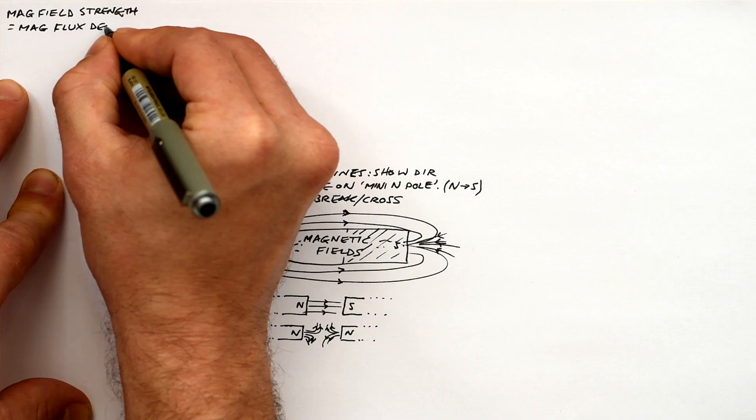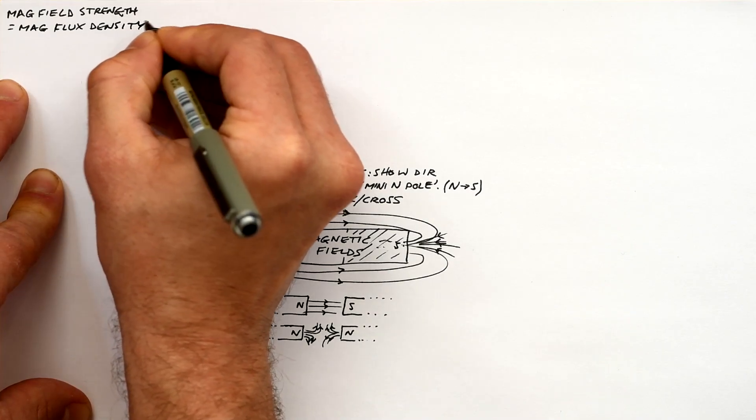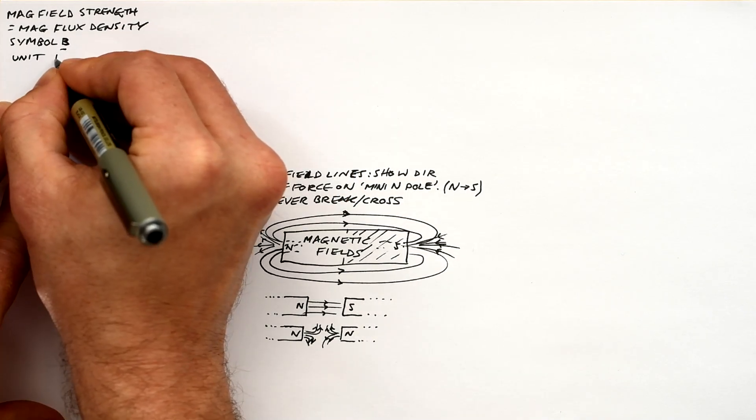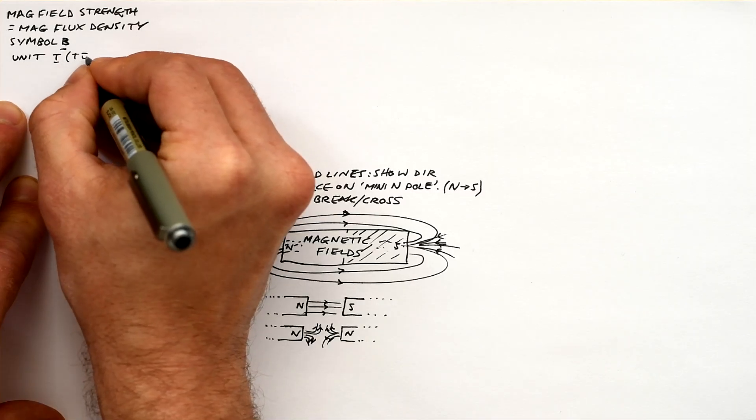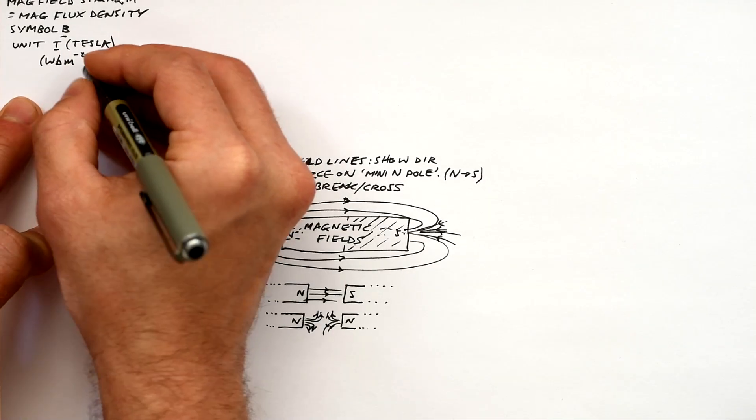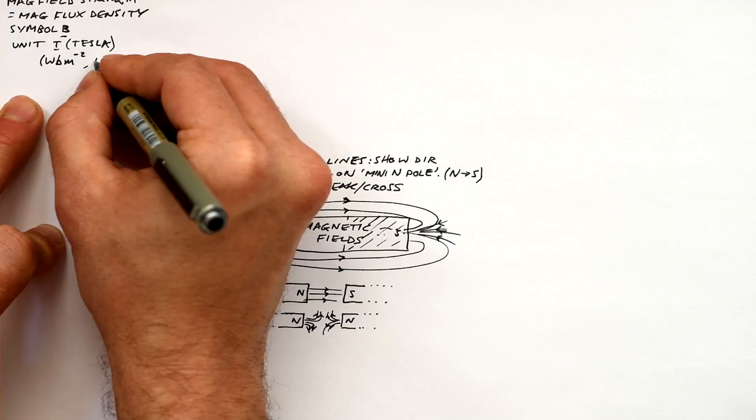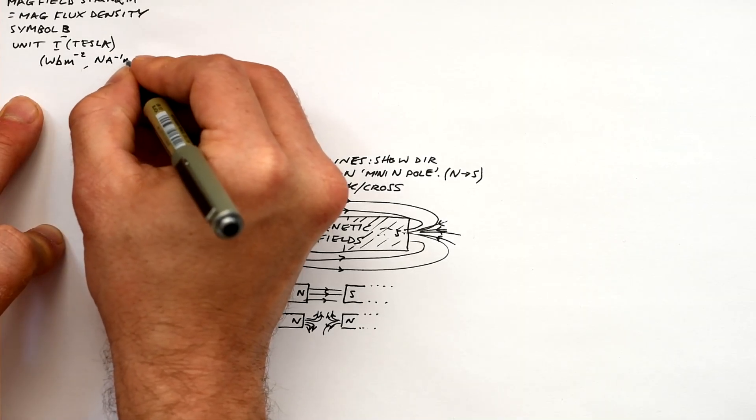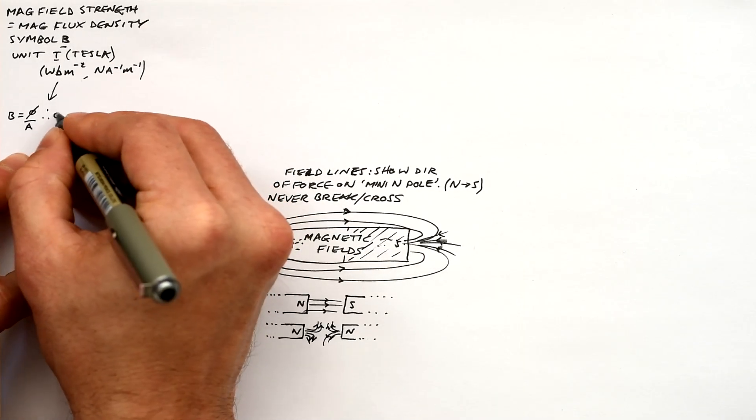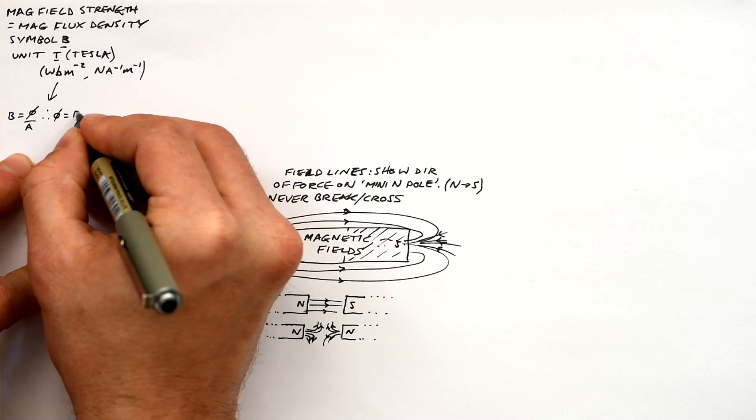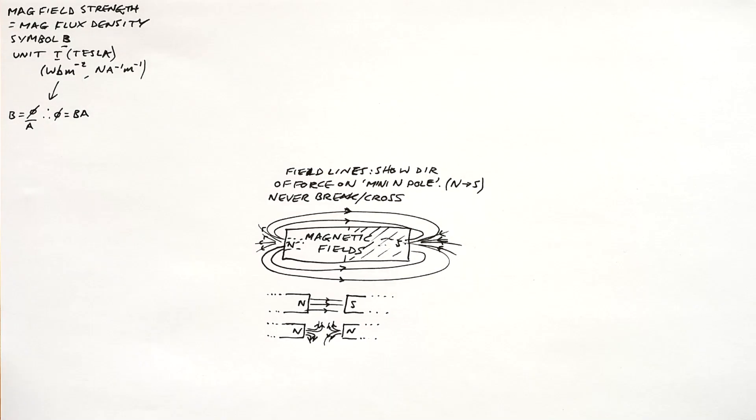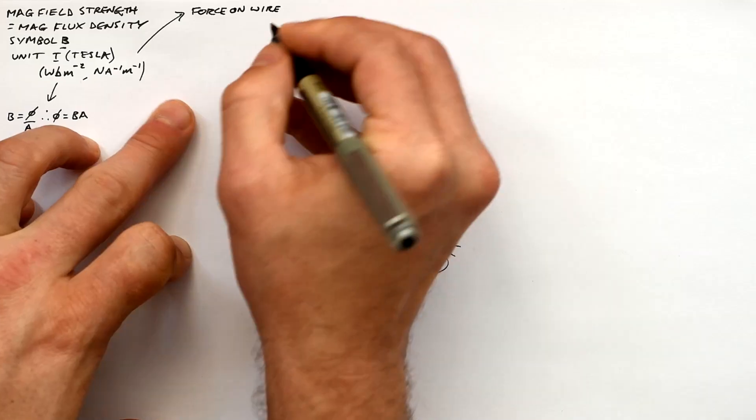Magnetic field strength, the proper name is actually magnetic flux density. The symbol is capital B and the unit is capital T for Tesla. For A-level you need to know the alternative units, that's V per meter square and newtons per amp per meter. You also need to know that flux density is equal to flux divided by area, so phi divided by A. So that means that phi equals BA, very important.